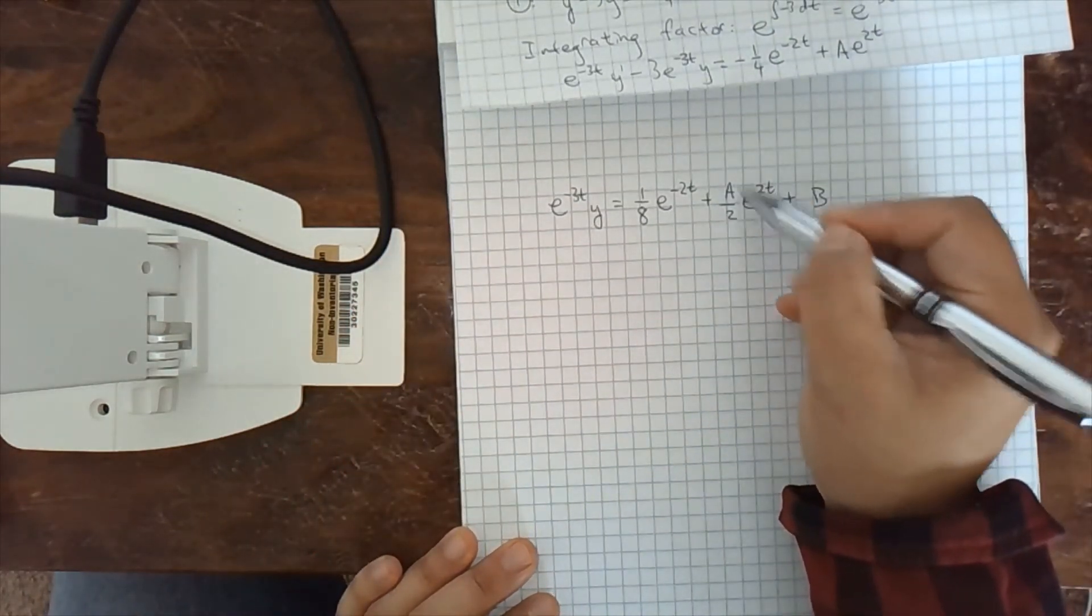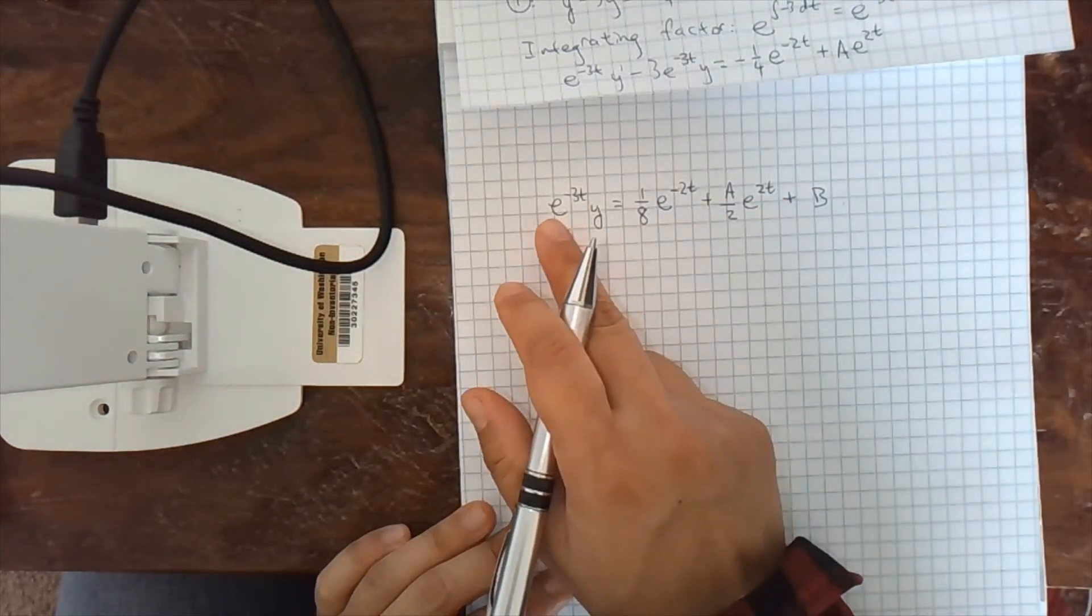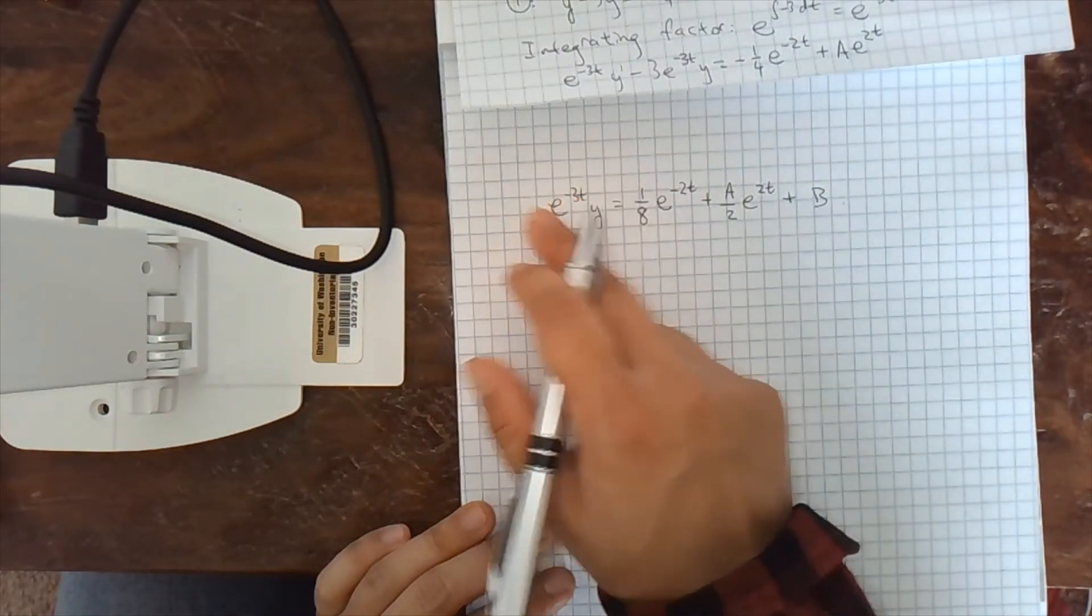Okay. And then this 2 can kind of be subsumed into that constant. We're going to change letters. At the same time, we're going to multiply both sides by e to the 3t to get rid of that.